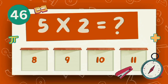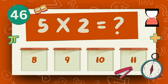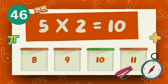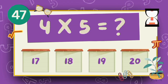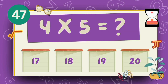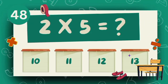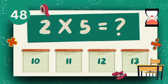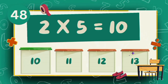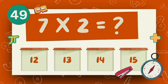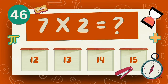What is 5 multiply 2? The answer is 10. What is 4 multiply 5? The answer is 20. What is 2 multiply 5? The answer is 10. What is 7 multiply 2? The answer is 14.